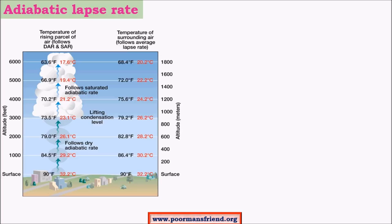Let us consider a parcel of air. A parcel of air simply means air which has a more or less homogeneous temperature region — that is, the temperature of the whole parcel is quite similar. It also has the same physical and chemical properties, that is the same composition and other properties. Hence we call it a parcel of air.